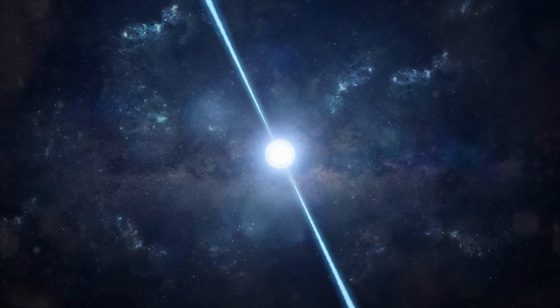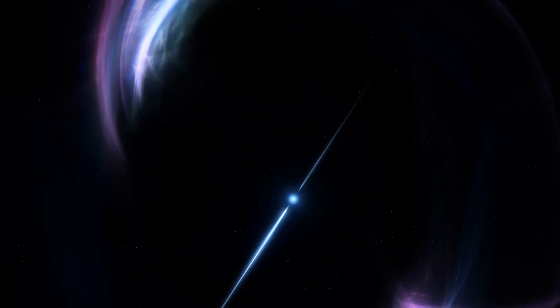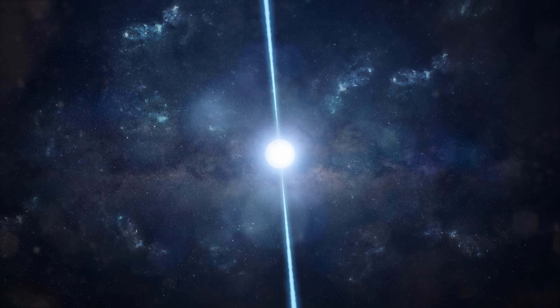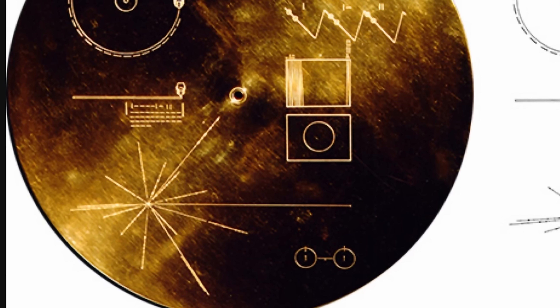Millisecond pulsars spin hundreds and even thousands of times per second, with an average period of about 10 milliseconds or less. By taking a few of these millisecond pulsars located throughout the Milky Way, we can measure minute deviations in their extremely precise rotations. Millisecond pulsars are very stable — they don't generally have starquakes or glitches and are technically even more accurate time predictors than atomic clocks. Using this principle, similar to the Pulsar Map on the Voyager golden disk, it becomes possible to measure minute deviations of spacetime caused by gravitational waves.